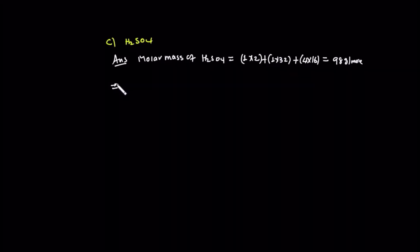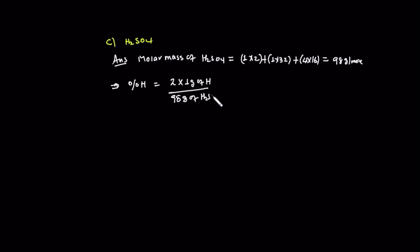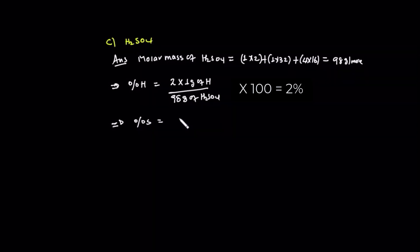So we can do the percent of hydrogen: 2 times 1 gram of hydrogen divided by 98 grams of sulfuric acid. In sulfuric acid, hydrogen is about 2 percent. The percent of sulfur: 1 times 32 grams of sulfur divided by 98 grams of sulfuric acid.